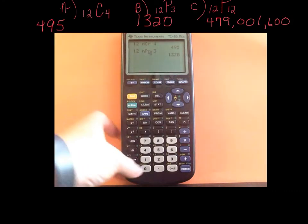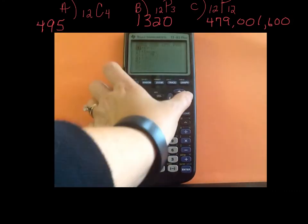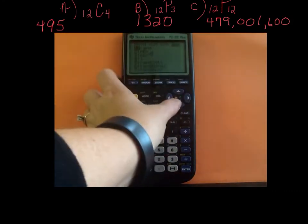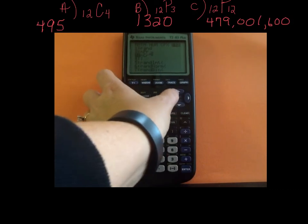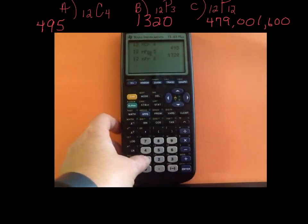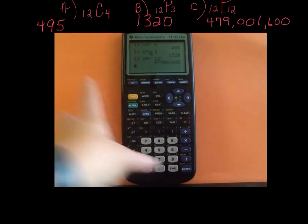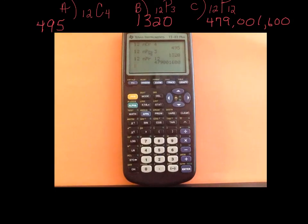Lastly, I had another permutation: 12, over to PRB, down to NPR, and I was using all 12 people to put them in a seating chart. There's the 479,001,600. So that's how to do this on your calculator.